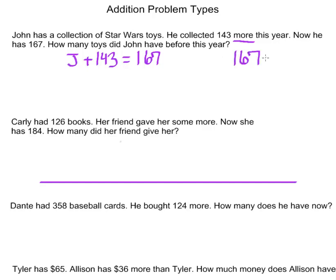So what I'm really doing is 167 minus 143. To do this, I am going to use the strategy arrow language to solve for my answer. I am going to subtract my 100 first, and I am left with 67.